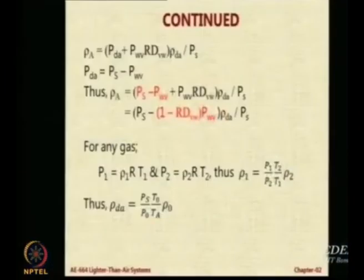Is this point clear? That using the universal gas law for two conditions, sea level condition and the condition at any operating altitude, by taking a ratio. So I want to replace this rho_DA, which is the density of the dry air, by parameters about air which I know at sea level.